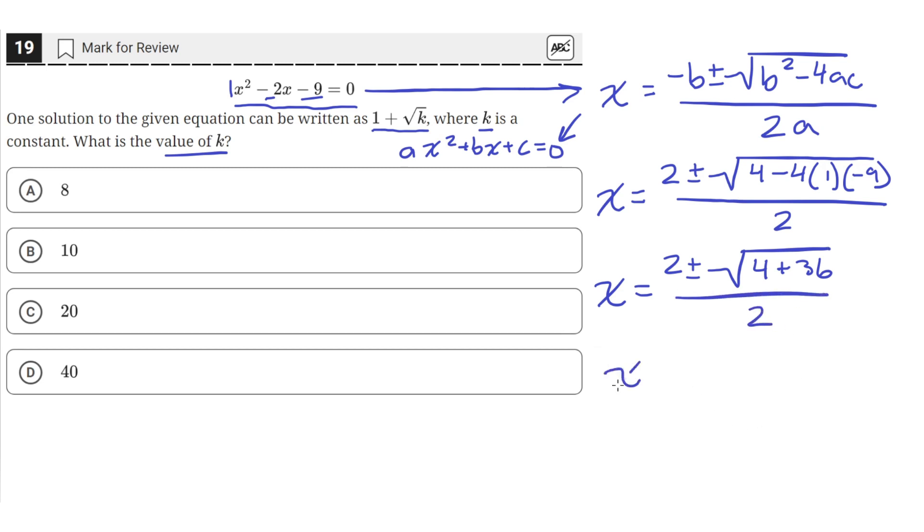Okay, so let's simplify this square root down. So we'll still have the 2 plus or minus. So this is the square root of 40 over 2. And we know that 40 is equal to 4 times 10.